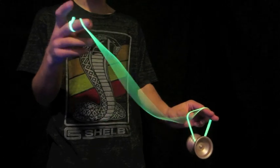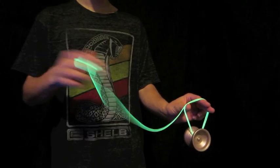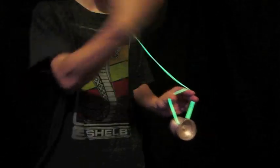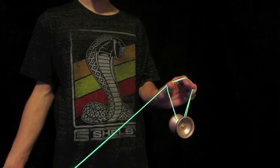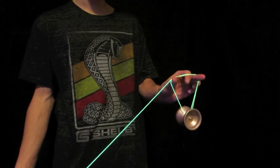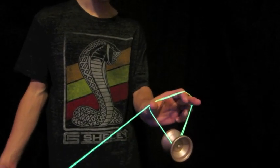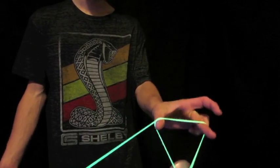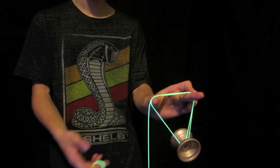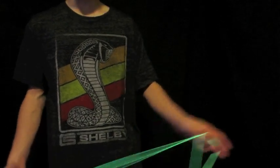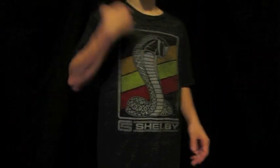Then basically all you're going to do is you're going to take this slack and you're going to whip it over. And you're going to undo what you just did, basically, so you're going to be in a single undermount. What you're going to want to do is take this finger right here and pinch the string that's on top of your middle finger. That's the first couple steps.